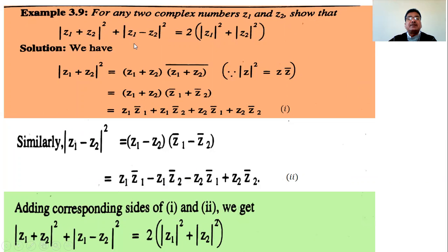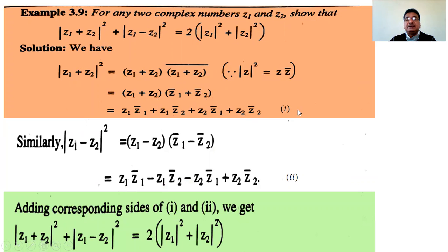To simplify |z1 + z2|², apply the rule |Z|² = Z·Z̄: so |z1 + z2|² = (z1 + z2)(z1 + z2)̄ = (z1 + z2)(z̄1 + z̄2). Expanding these two brackets gives four terms: z1·z̄1 + z1·z̄2 + z2·z̄1 + z2·z̄2. Call this equation (1).